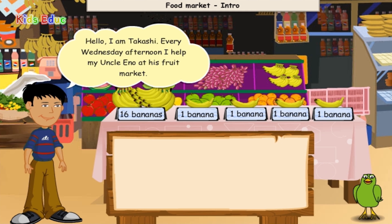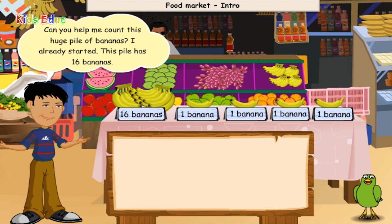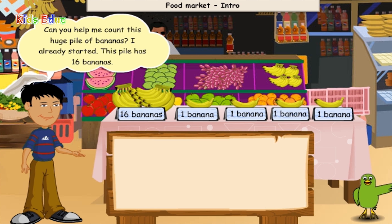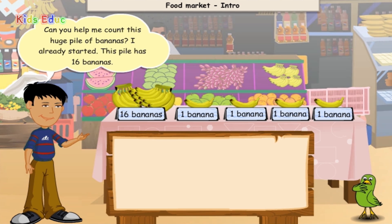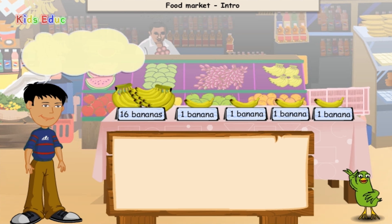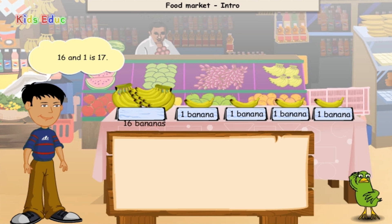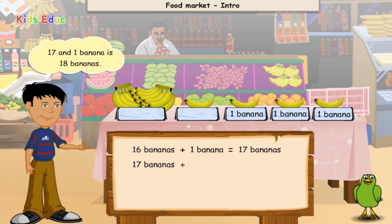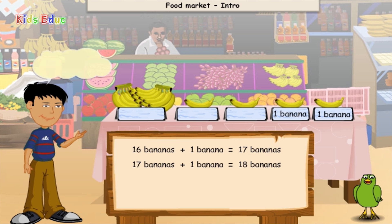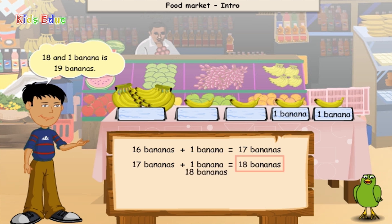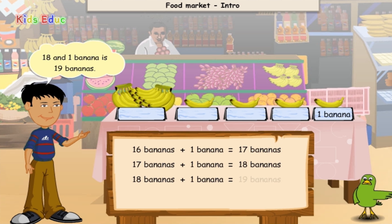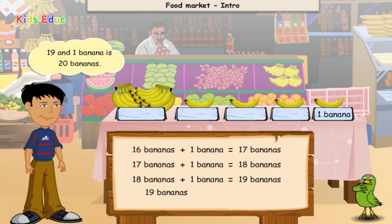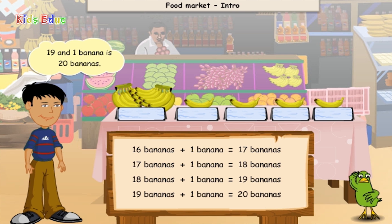Every Wednesday afternoon, I help my Uncle Eno at his fruit market. Can you help me count this huge pile of bananas? I already started. This pile has 16 bananas. 16 and 1 is 17. 17 and 1 banana is 18 bananas. 18 and 1 banana is 19 bananas. 19 and 1 banana is 20 bananas.